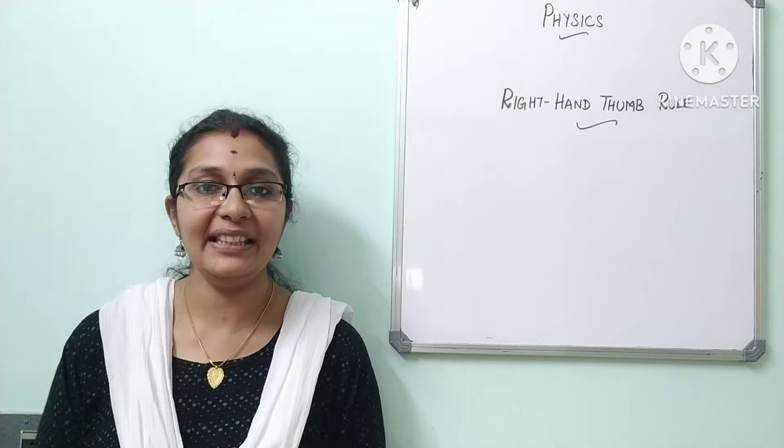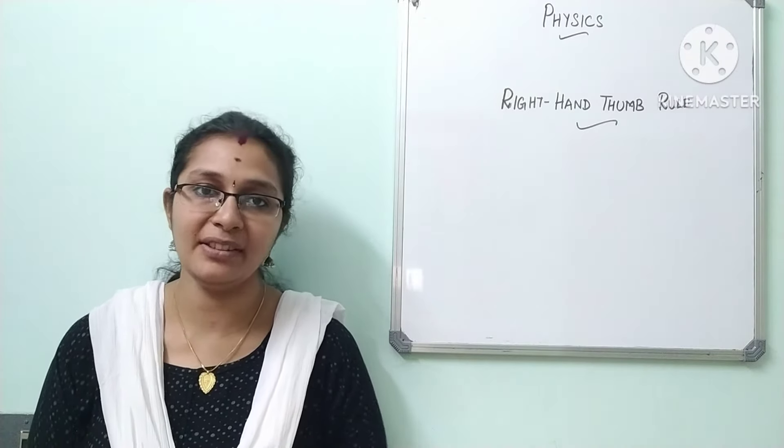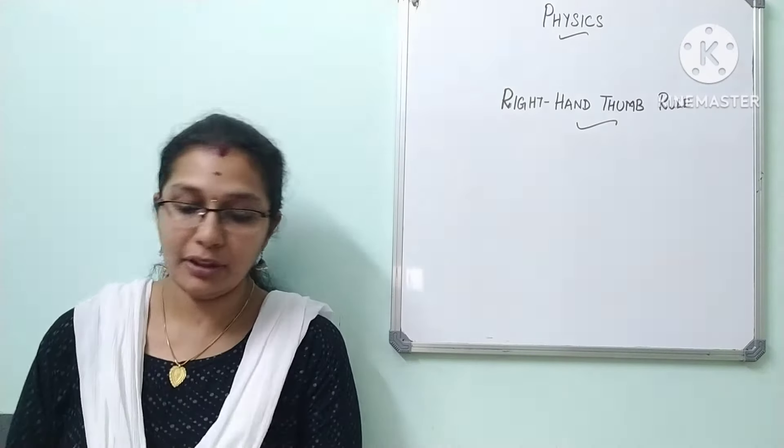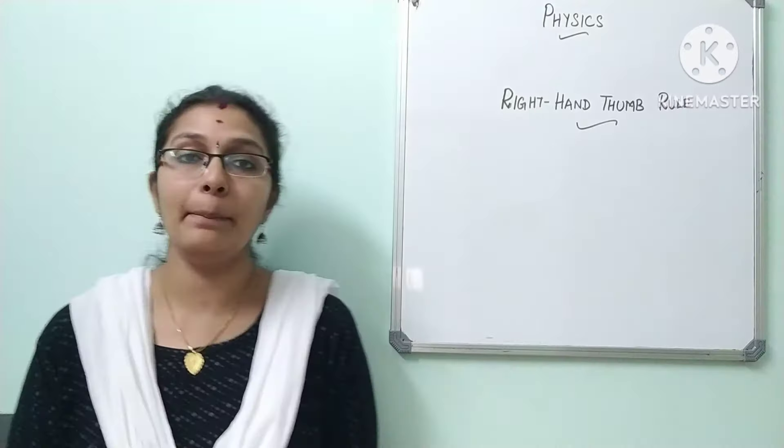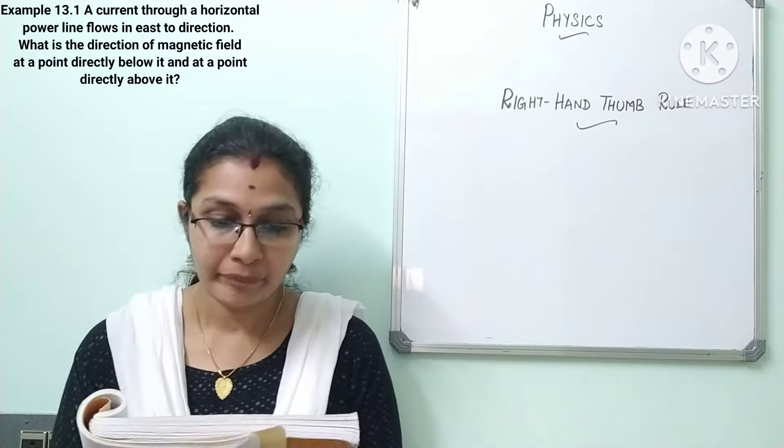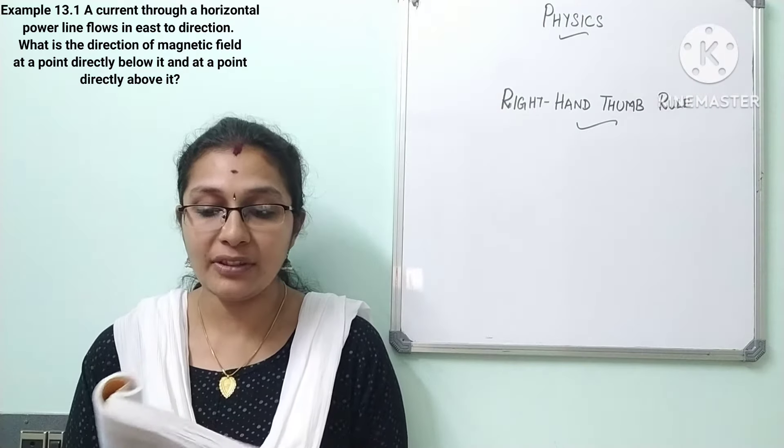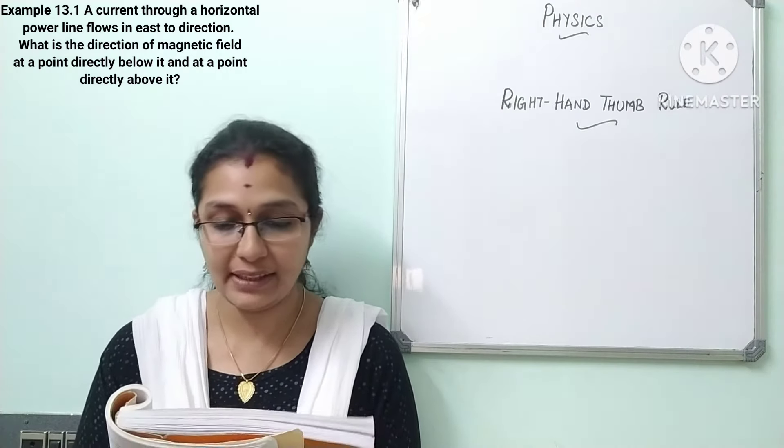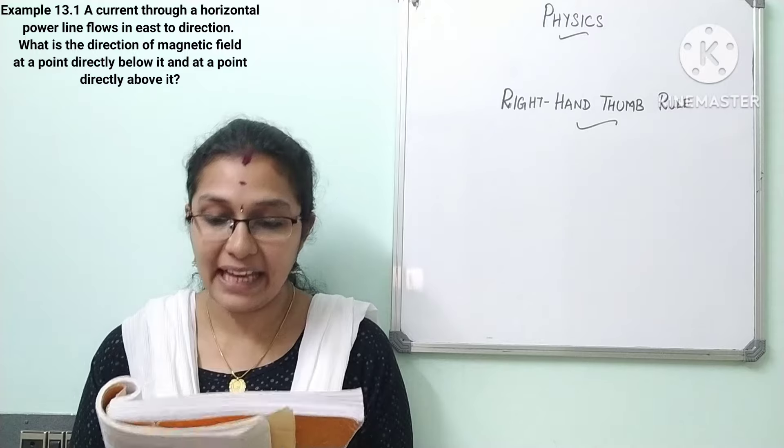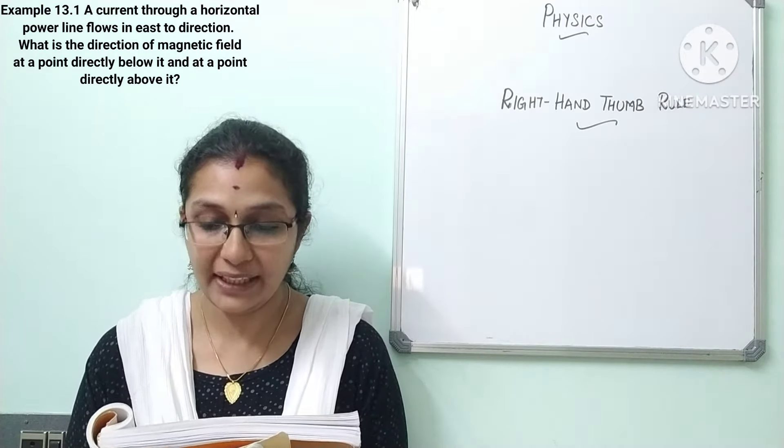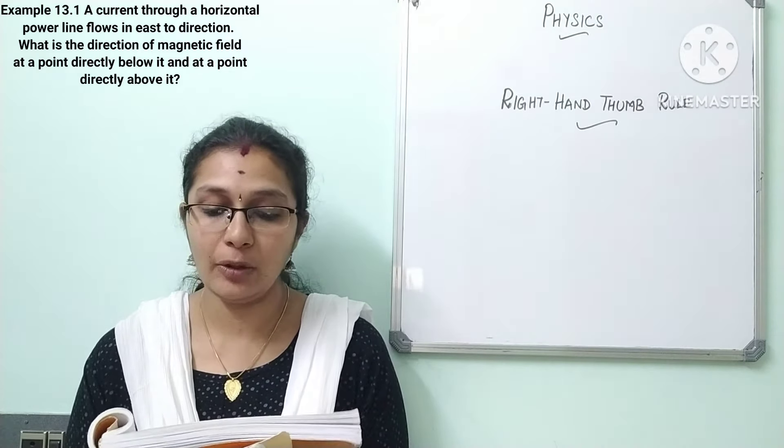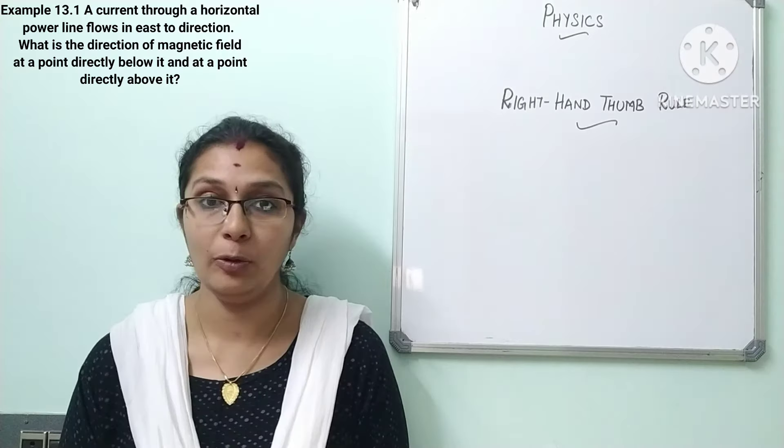And then come here so you will have an easy understanding of how to solve this question. So the question is like this, Example 13.1: A current through a horizontal power line flows in east to west direction. What is the direction of magnetic field at a point directly below it and at a point directly above it?